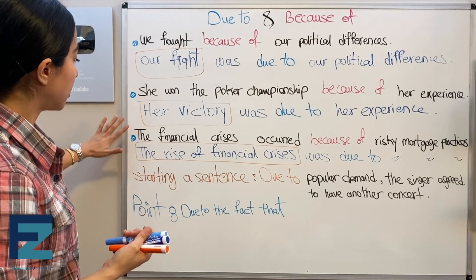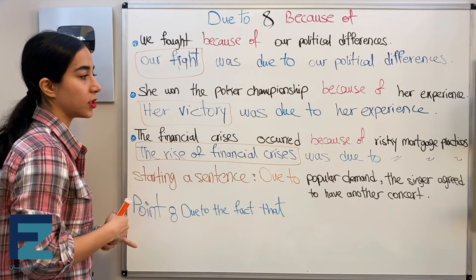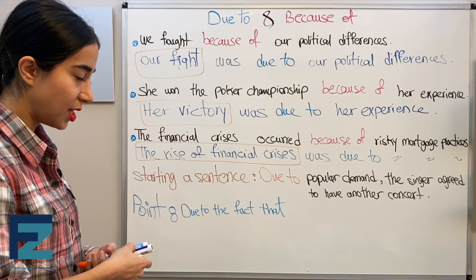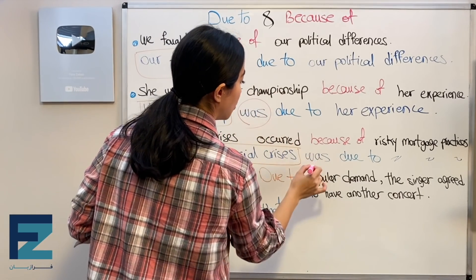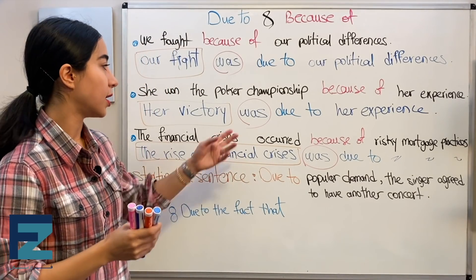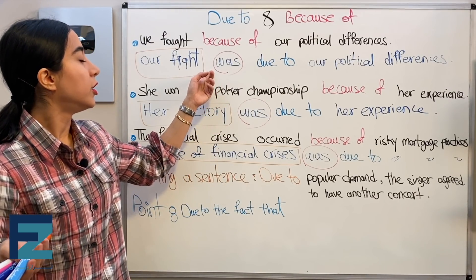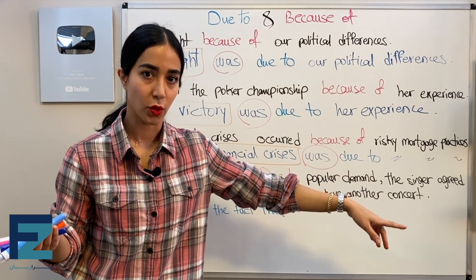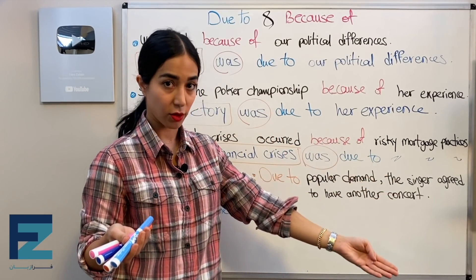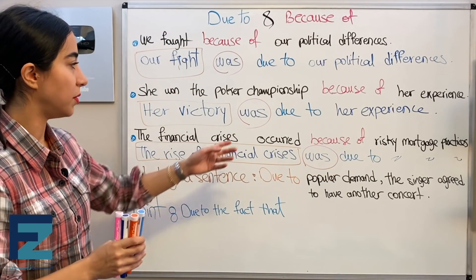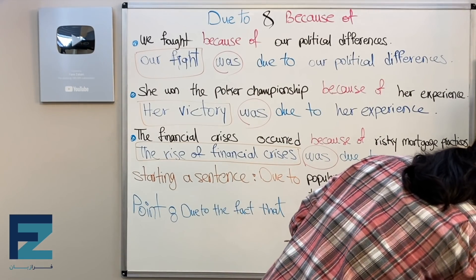If you look at these three sentences — 'Our fight was due to our political differences,' 'Her victory was due to her experience,' 'The rise of financial crisis was due to risky mortgage practices' — you'll notice a pattern: there's a noun phrase followed immediately by a to-be verb (is/are/was/were) before 'due to.' This is a useful trick, not a strict rule, but it can help when taking tests or filling in blanks.